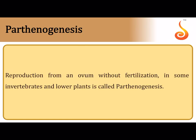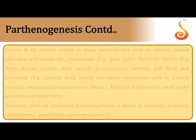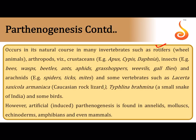Parthenogenesis refers to reproduction from an ovum without fertilization — formation of a young one directly from the ovum without any contribution by the sperm. Parthenogenesis occurs naturally in rotifers, arthropods, crustaceans, and arachnids, and also in some vertebrates like the Caucasian rock lizard (Lacerta saxicola armeniaca), Typhlina bramina — a small snake of India — and even some birds like turkey.